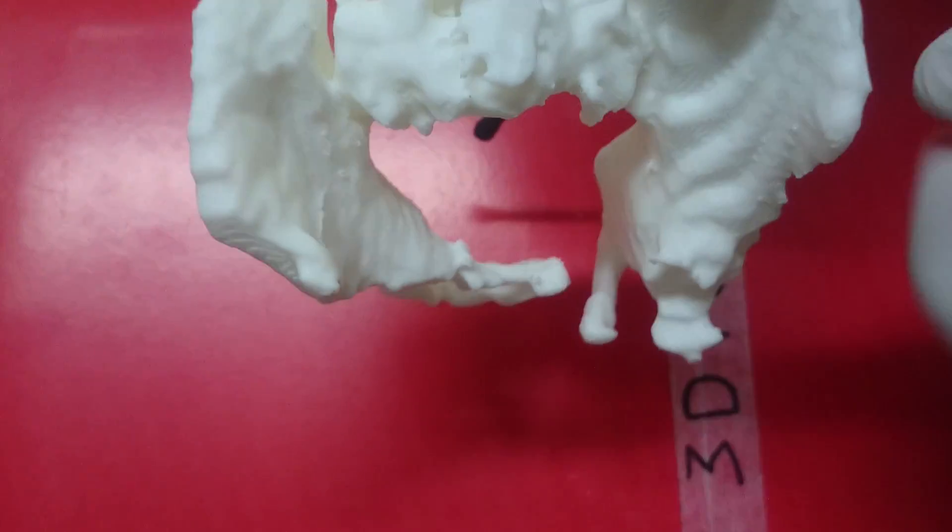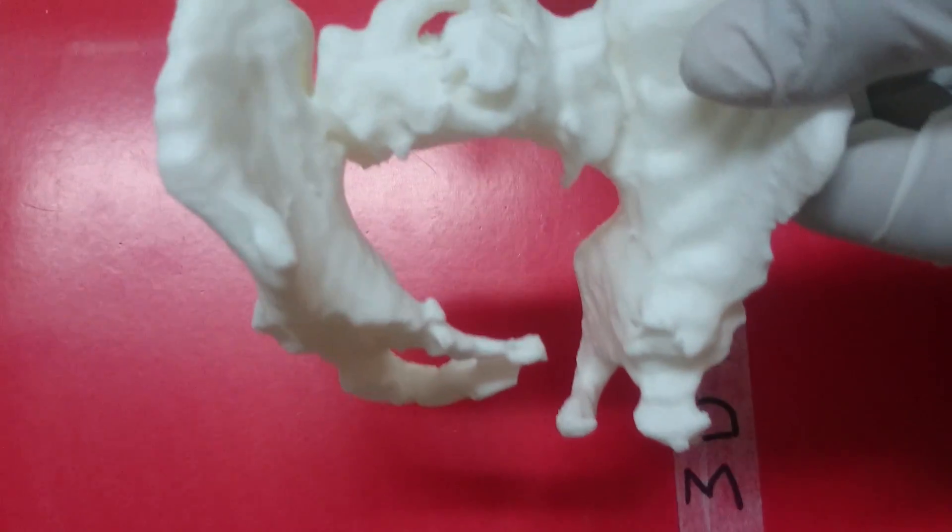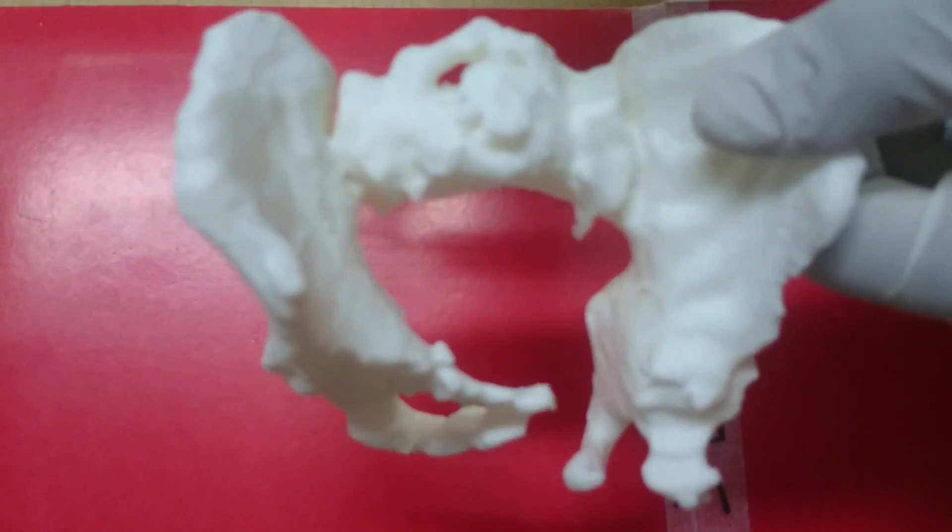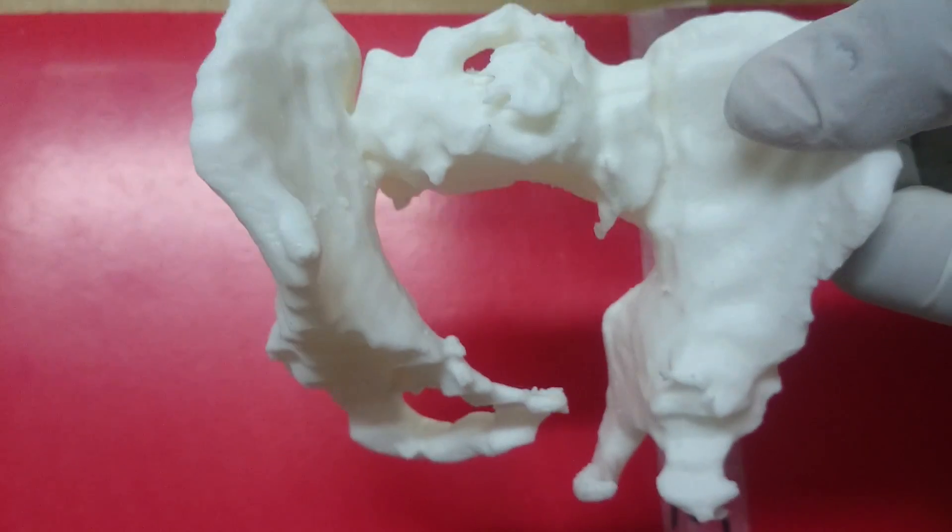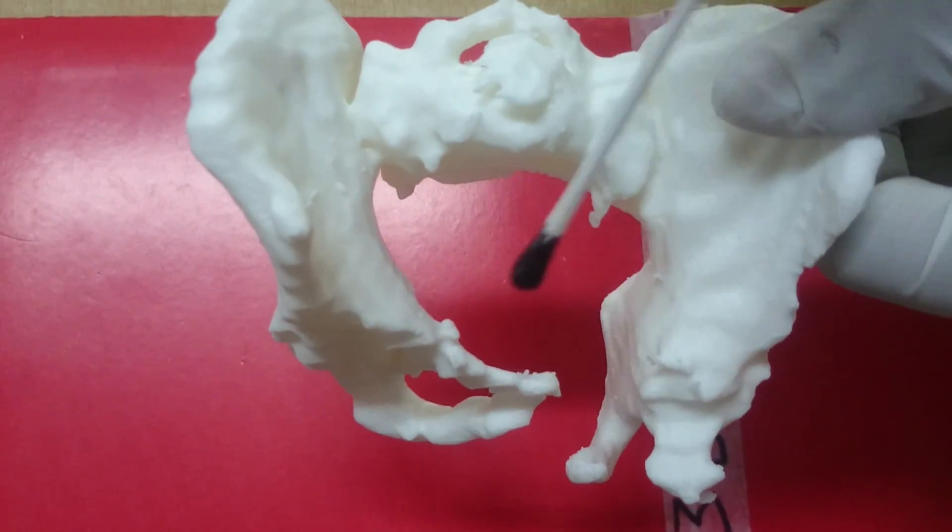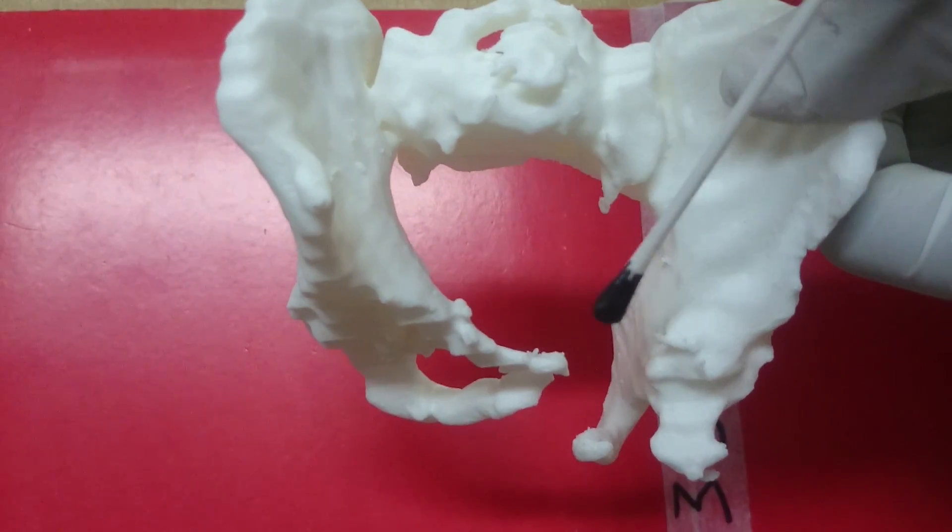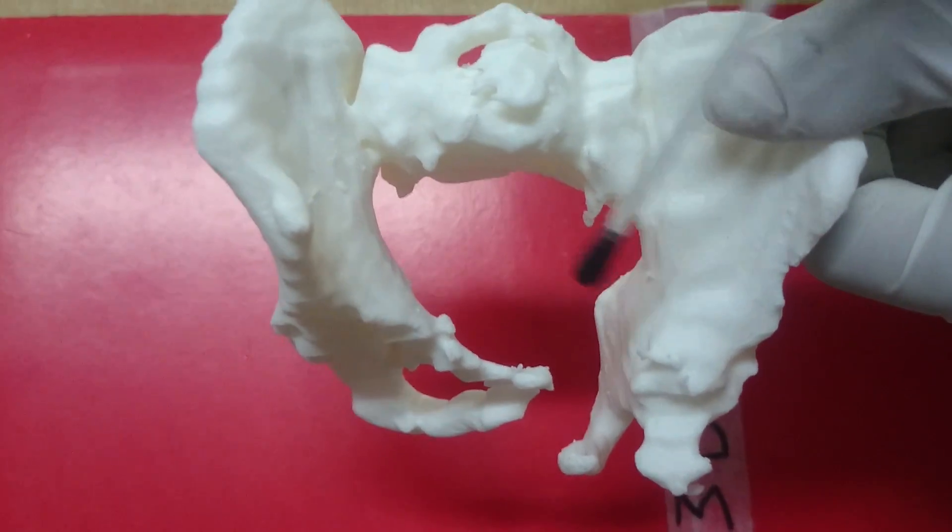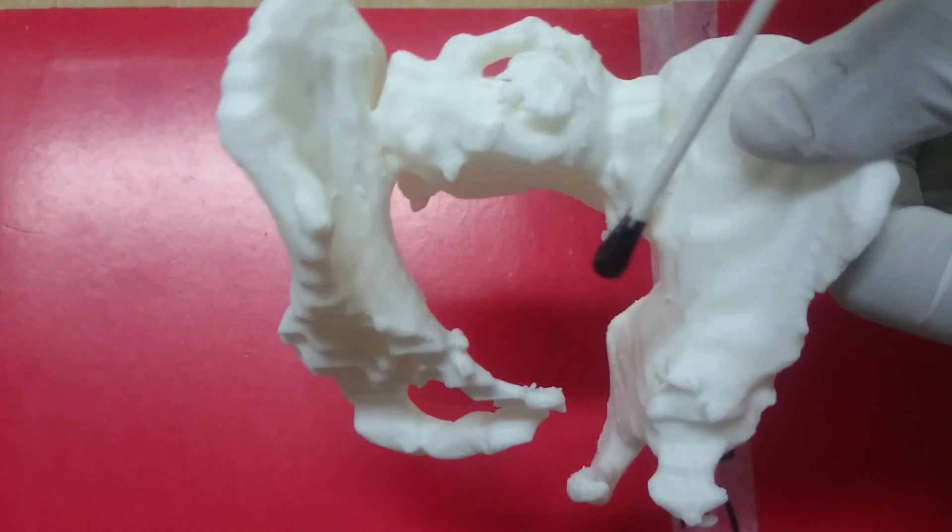The CT scans normally do give us a fair amount of information on what the fracture is like. But having this thing in hand ensures that one can plan his surgery, do a surgical simulation, and also sometimes help detect unknown injuries.